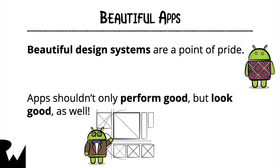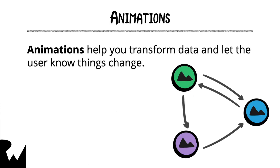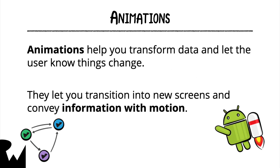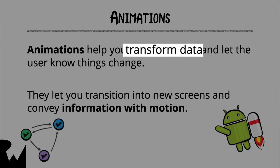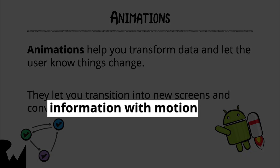These days, every company is boasting about its beautiful design system and how it improves their apps. It's become more and more important that applications not only perform good, but also look attractive. A core part of that philosophy is having different types of animations in your app. Through animations, you can transform the data of your UI elements and let the user know things have changed. You can transition from one screen to another or between states on the same screen, using movement and changes in the user interface to convey more information.